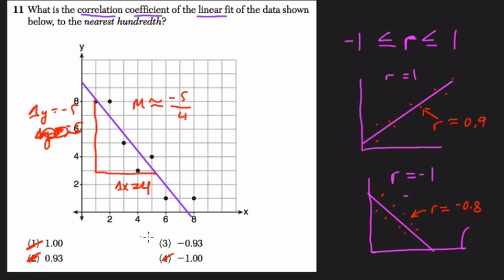Then the only choice left is negative 0.93. And that makes sense. This is a pretty good fit.